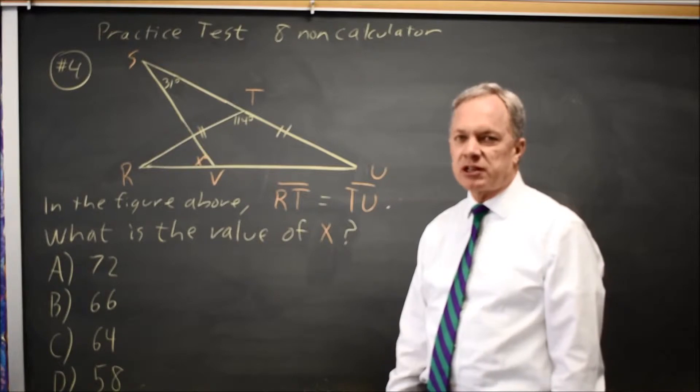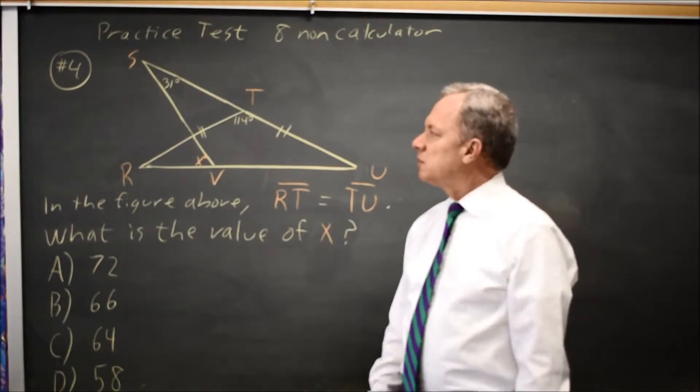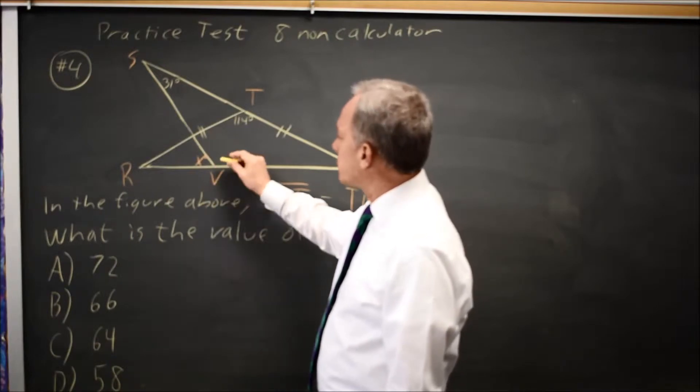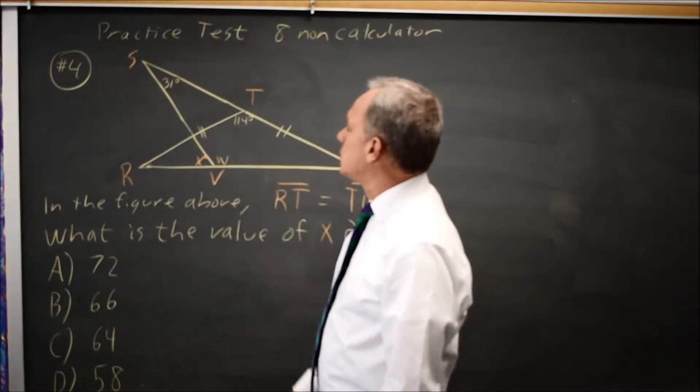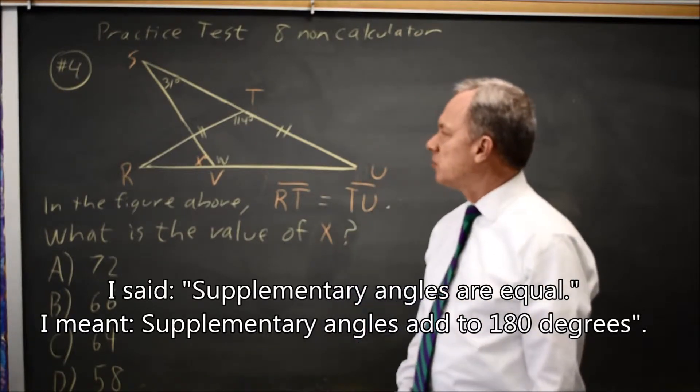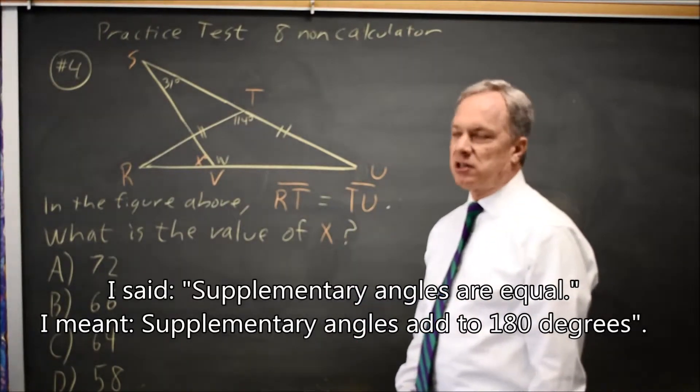Typically, we'll use the fact that supplementary angles, two angles that add up to a straight angle like X and this angle on the other side here, which I'm going to call W, supplementary angles are equal. And the fact that if two sides are equal, then the opposite angles are also equal.